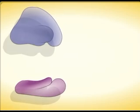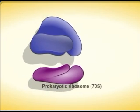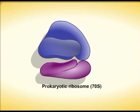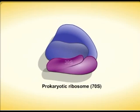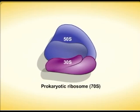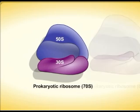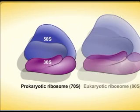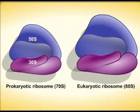In bacteria and archaea, protein synthesis occurs on 70S ribosomes, made up of 30S and 50S subunits, whereas in eukaryotic cells, translation occurs on 80S ribosomes, made up of 40S and 60S subunits.